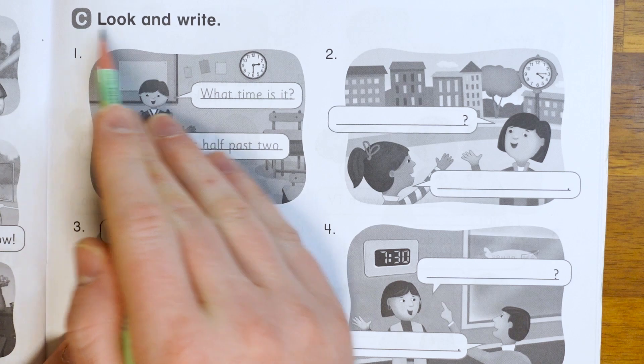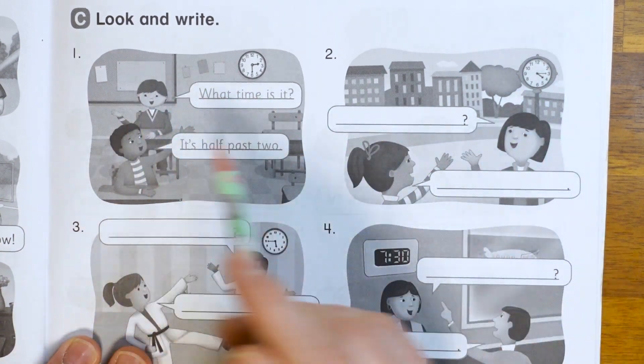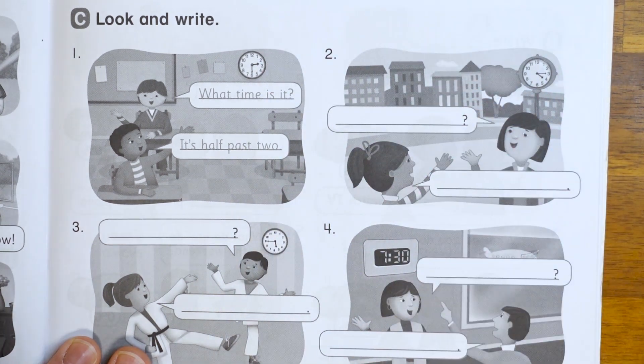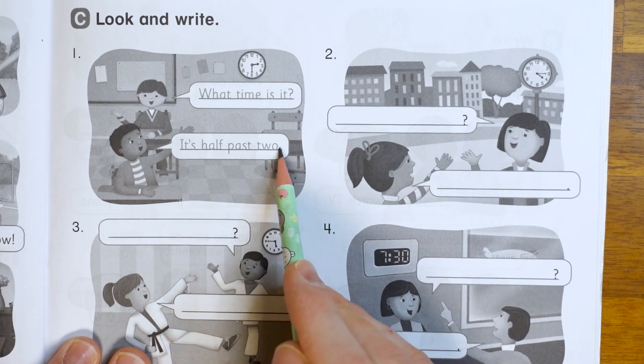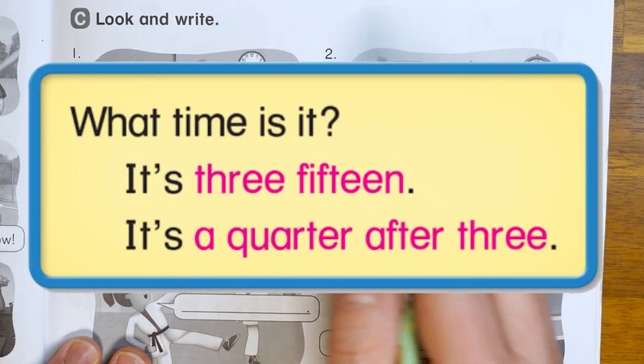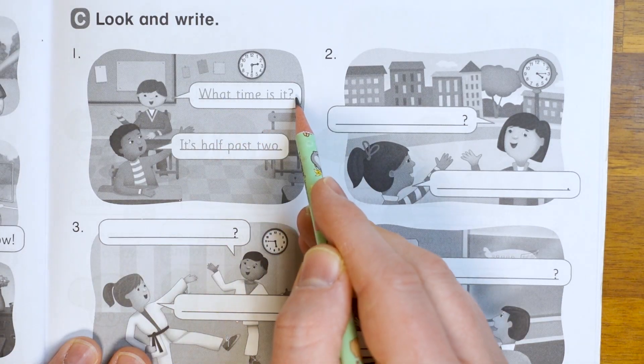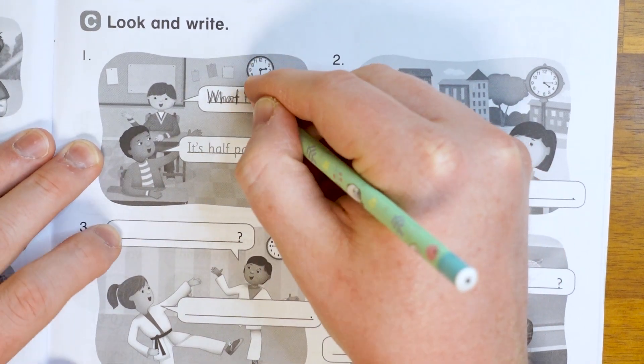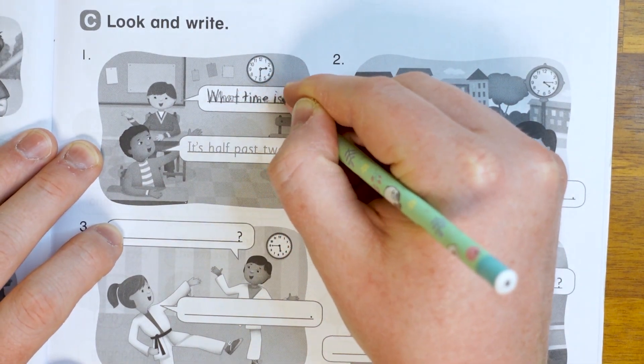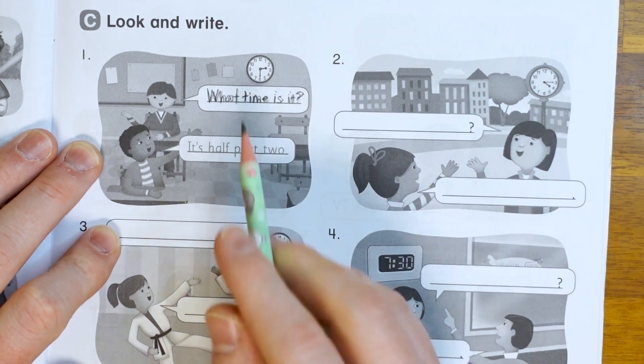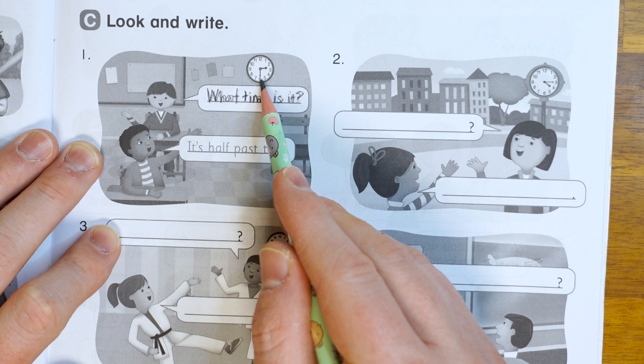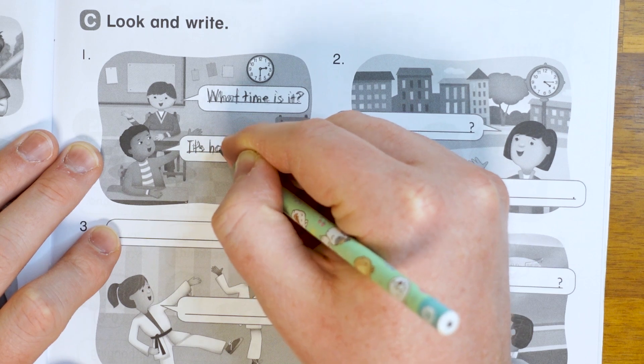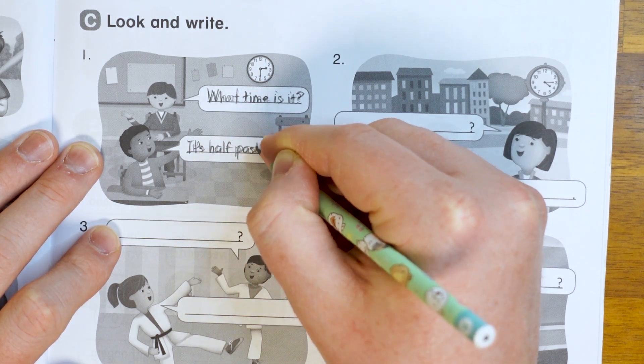Okay. This is part C and it says look and write. So we're going to make questions and answers about the clocks in each picture. And if we can, they want us to answer using these kinds of words. Alright. So let's just trace number one. The question is what time is it? So trace that. What time is it? Question mark. And we look at the clock. 2:30. So half past two, let's just answer. It's half past two.